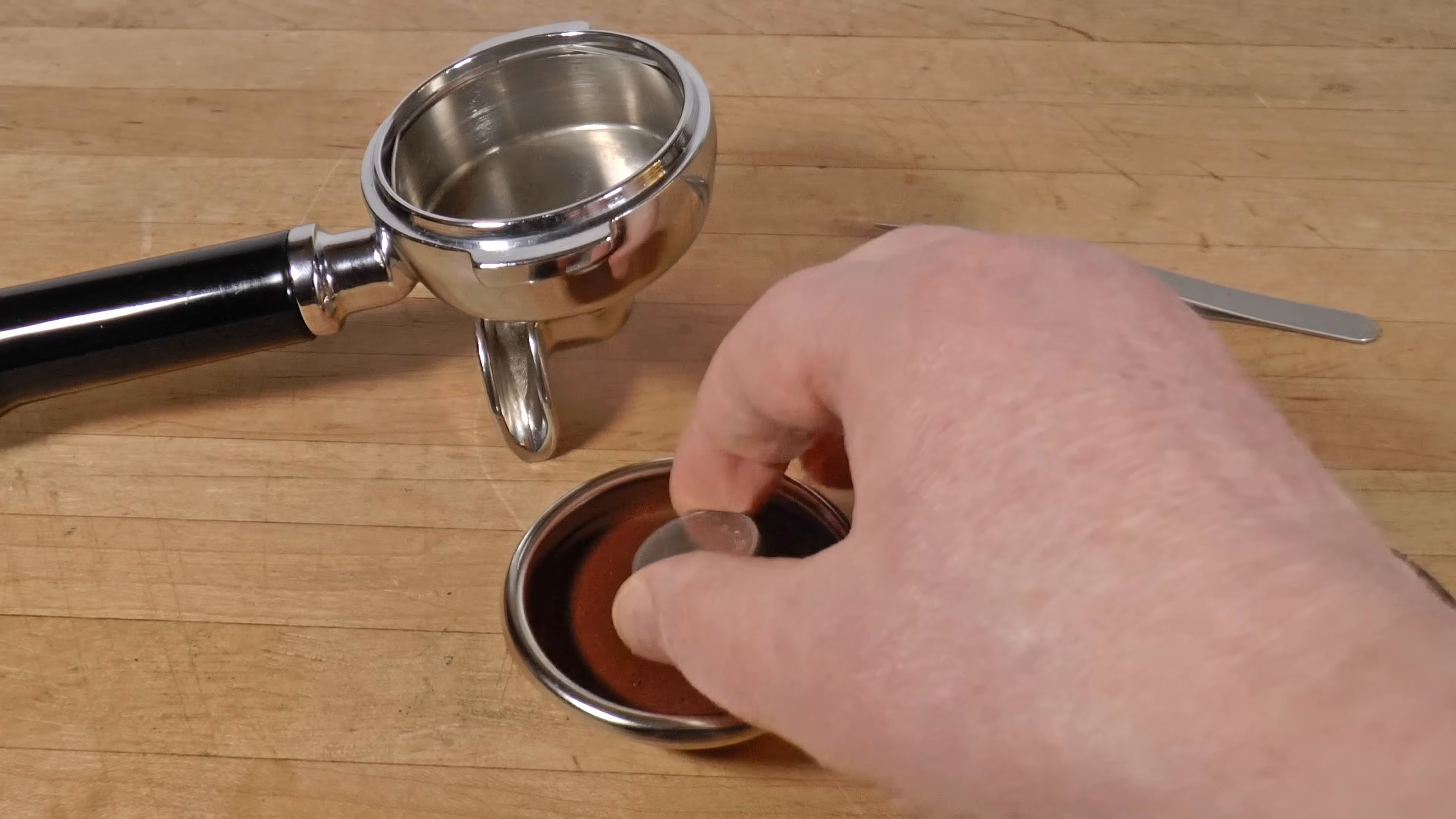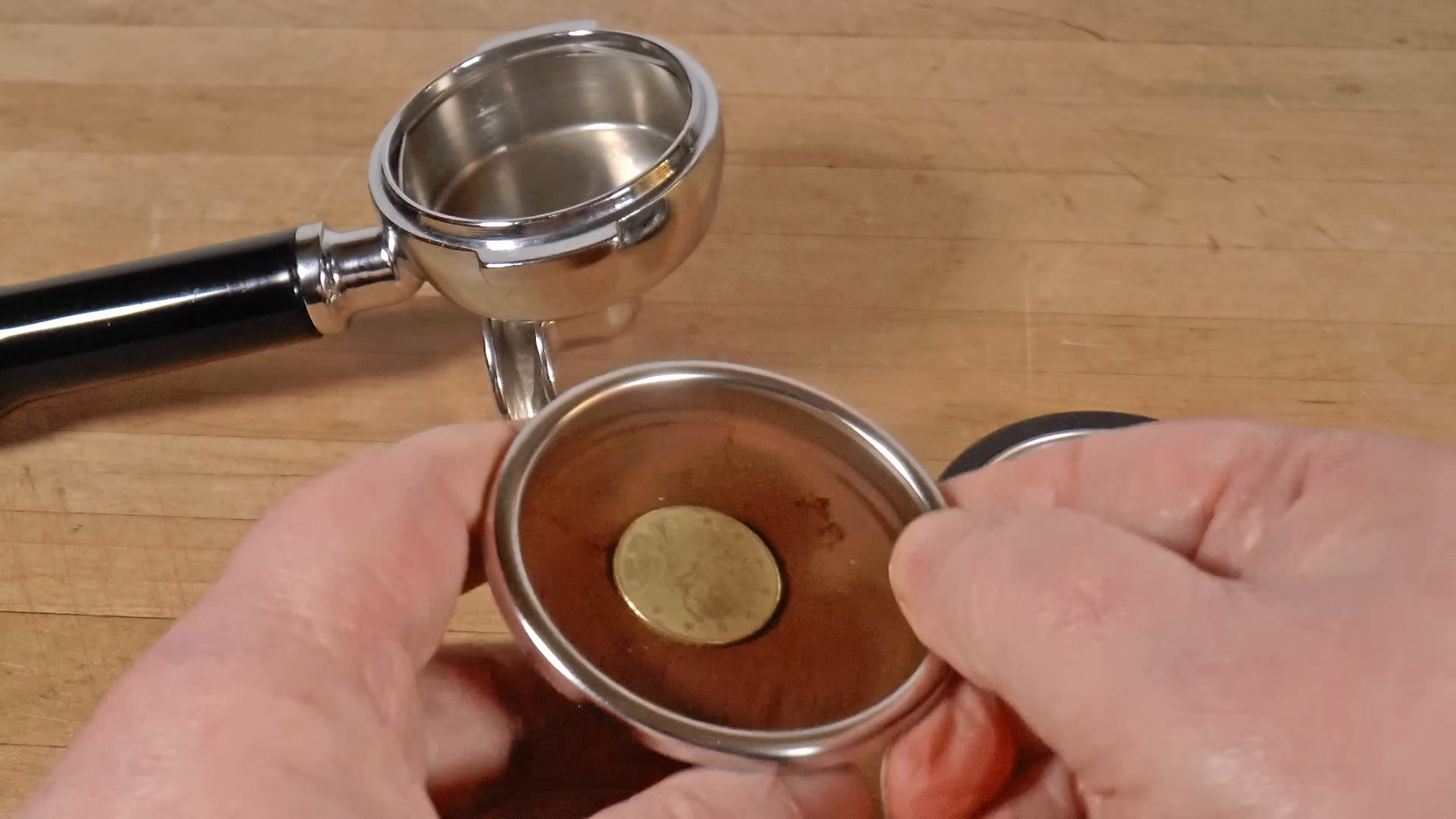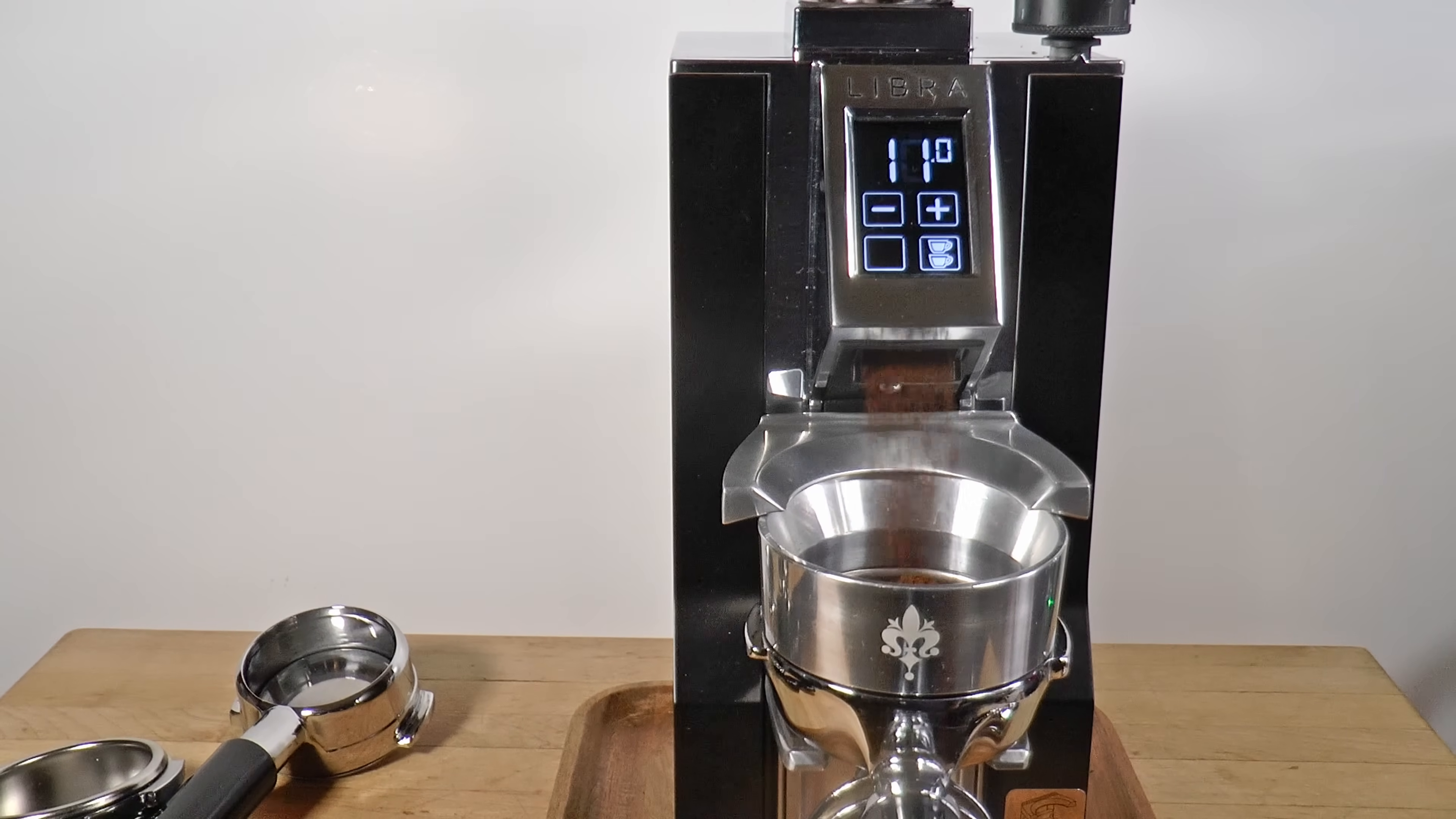I'll use the shower screen test to confirm that there's enough headroom, but not too much. The smaller coin leaves no impression. The thicker one is obviously pressing, so much that it cracks the puck. Now I know that I have more than 1.5mm and less than 2mm between the shower screen and the coffee, which is perfect. It turns out that 11.5 grams of the coffee I'm using here occupies the right volume for this basket. Your mileage will vary.